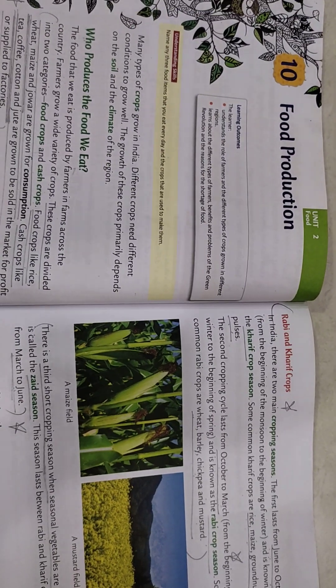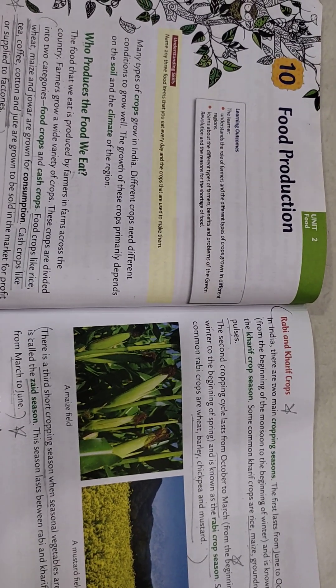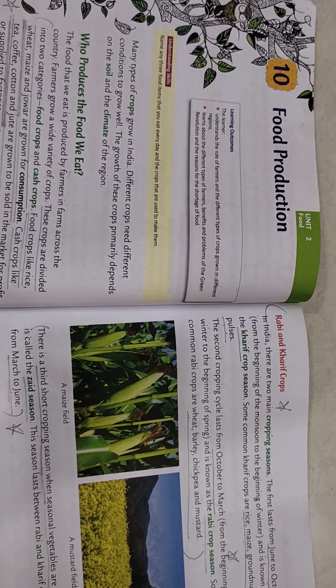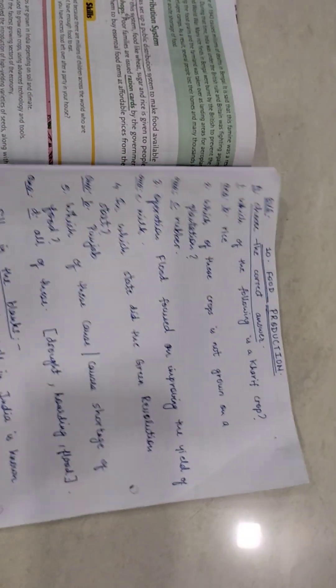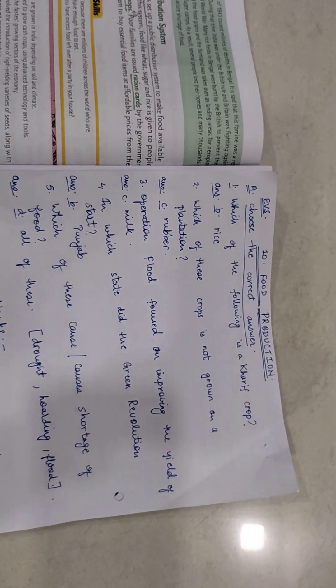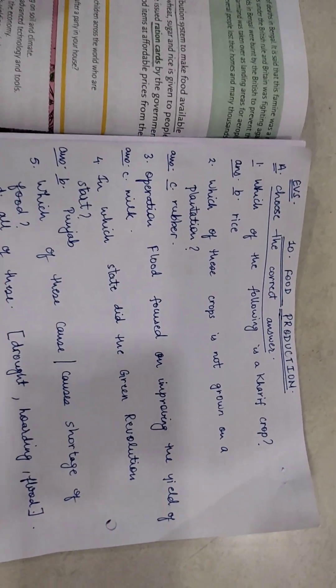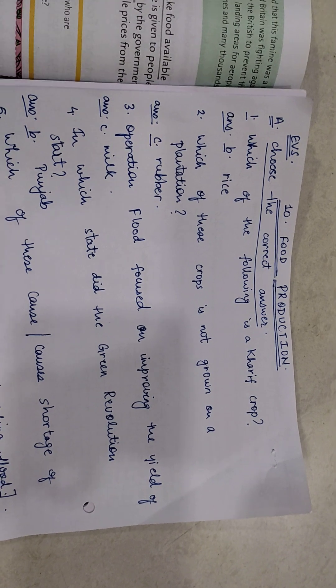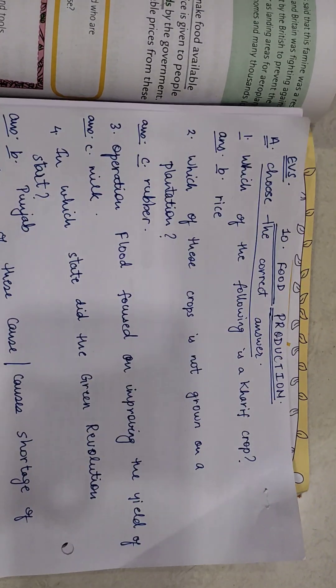Hello friends, we are going to see EVS chapter number 10, Food Production, from standard 5th. We will see exercises from behind the textbook. First we will see choose the correct answer. I will be going to read only the answers with you.